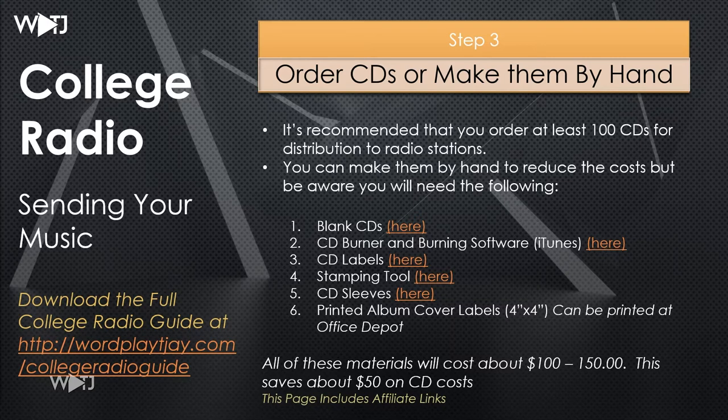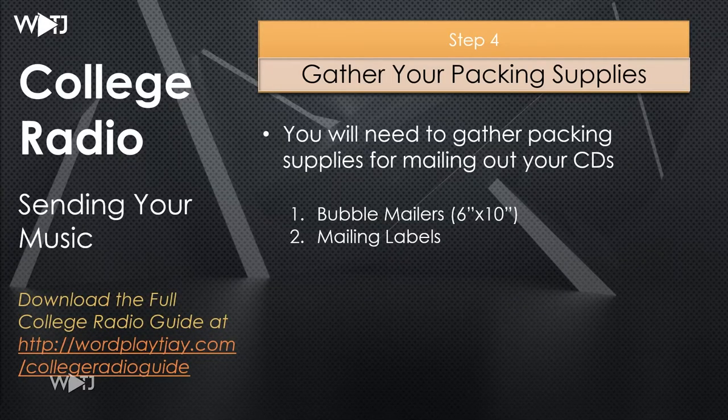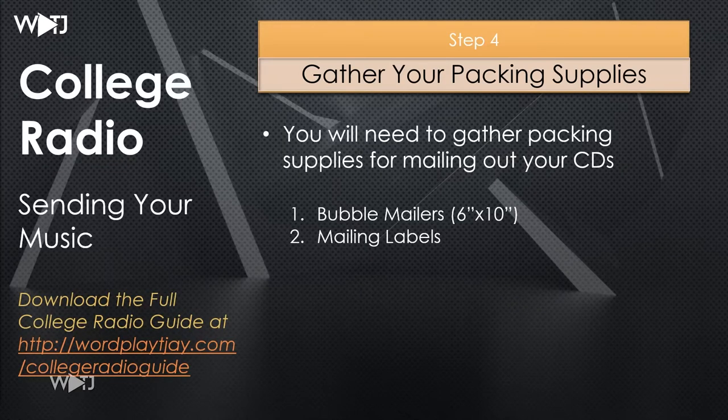One 8.5 by 11 sheet will hold four album covers. For packing supplies, you can order from a place like Amazon or go down to Office Depot or a similar store. You would need six by ten bubble mailers — this is what a bubble mailer looks like — and you need mailing labels. Those mailing labels are usually pretty small, but you can buy some larger ones that'll fit onto the bubble mailer. Stick them on once the addresses are printed on there.